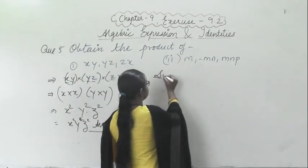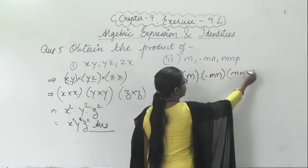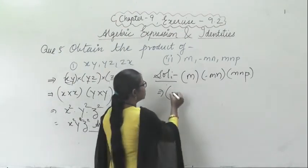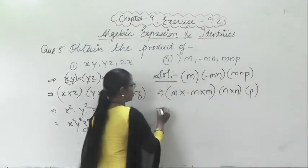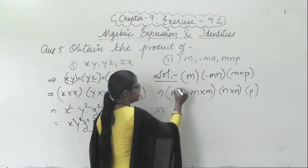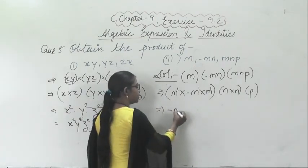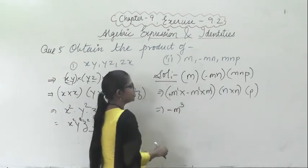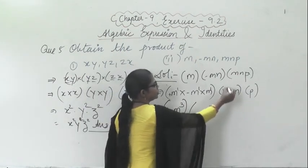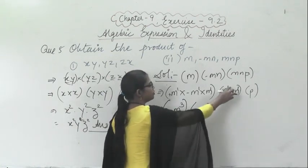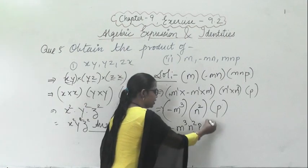Similarly, the second question says find the product of m into minus mn into mnp. Taking the m terms together: m into m into m — since bases are the same, 1 plus 1 plus 1 is 3, giving m to the power 3. For the sign: plus times minus is minus. For n: n into n — 1 plus 1 is 2, giving n squared. And p remains. So the answer is minus m³n²p.